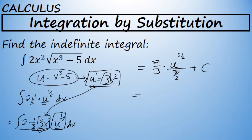When I divide by three-halves, it's the same thing as multiplying by the reciprocal two-thirds. I'll also, at this point, replace u to the three-halves with (x³ - 5) to the three-halves plus C.